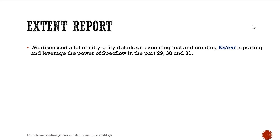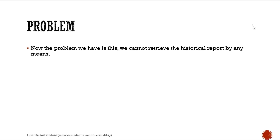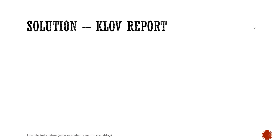We discussed a lot of nitty-gritty details on executing tests and leveraging the power of SpecFlow in parts 29, 30, and 31. The report we generated earlier was an HTML report which was offline, and every time the test executes a new HTML file will be generated — it won't append the existing file. The problem is that every time we run the test it generates a new report, and we cannot retrieve historical reports because every time it's going to be a new file. There is no historical report.